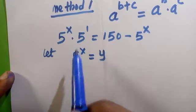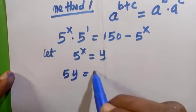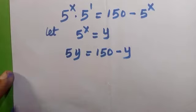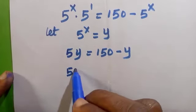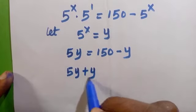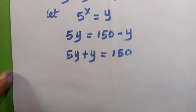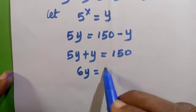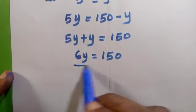So by doing that you have 5y equals 150 minus y. By collecting the like terms we are going to have 5y plus y equals 150. Since this is a linear equation, we add this together and it becomes 6y equals 150. Then by dividing both by 6 we are going to get the value of y.